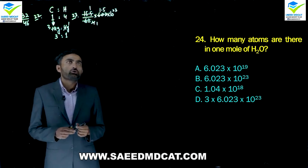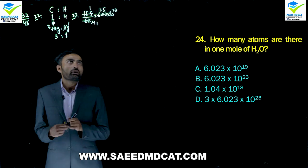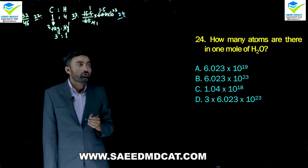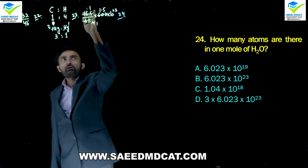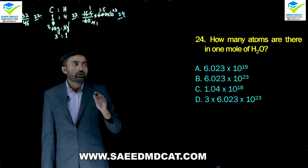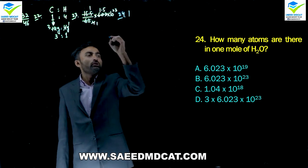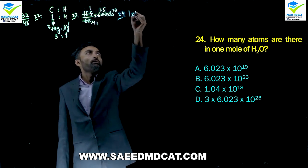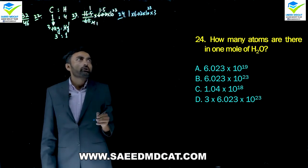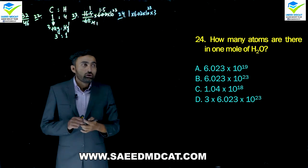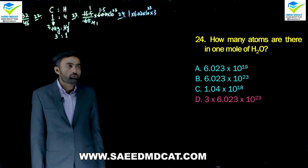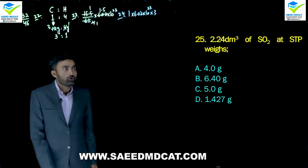Question 24: How many atoms are there in one mole of water? Formula: moles × Avogadro's number × total atoms per molecule. Water has 3 atoms per molecule (2H + 1O). So: 1 × NA × 3 = 3NA. Delta option (3 × Avogadro's number) is correct.